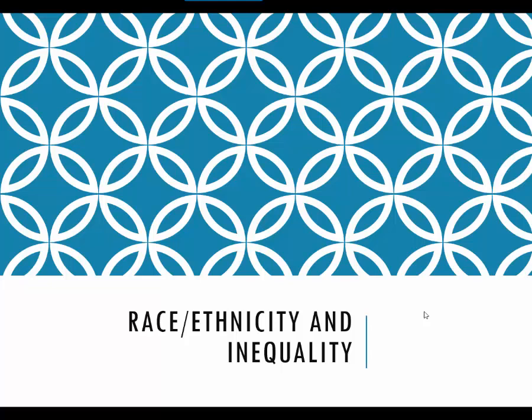Video two is going to discuss the concepts of majority and minority group as well as the concepts related to racism, prejudice, and discrimination. Videos three and four will be the videos where we discuss the socio-historical background of the major racial ethnic groups in America as well as their contemporary status. Video five, which will be the shortest, is kind of a 'where do we go from here' — we'll tackle contact theory, affirmative action, and the distinction between colorblind versus race-conscious ideology.